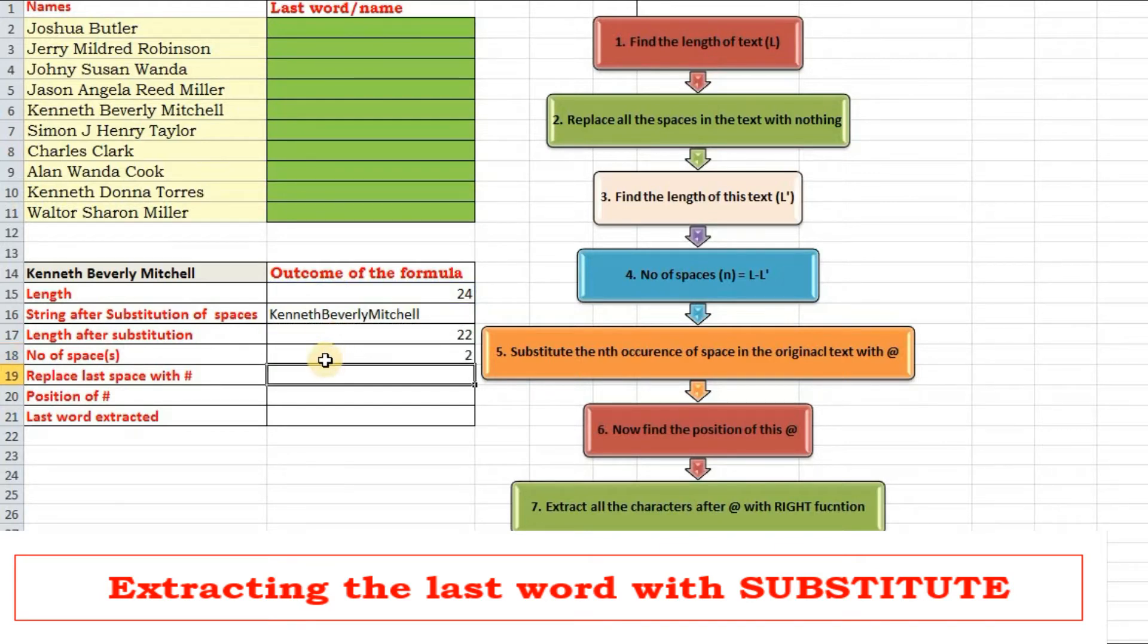Now that I have found out the number of spaces I will replace the last space with some other character. Look at the syntax of this substitute function. The last one is the instance number and we are going to exploit this feature of substitute function. What we will do here is that we will substitute the last instance of space with any other character say hash, the number of spaces.